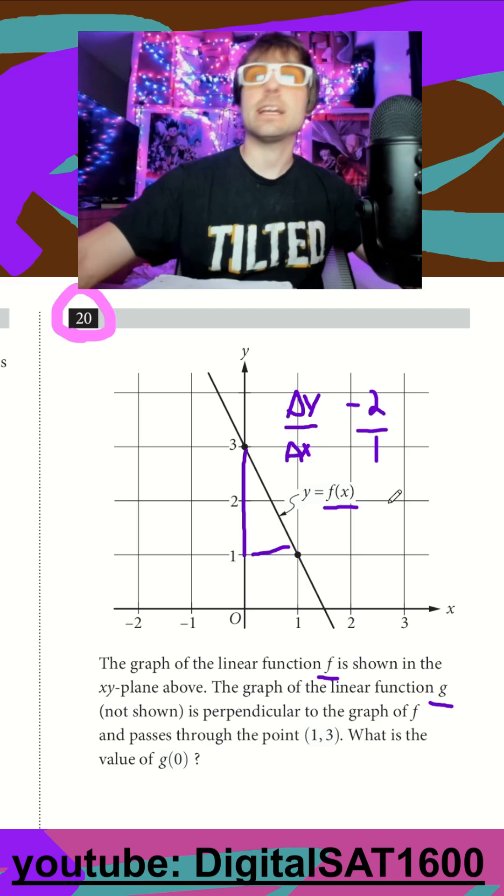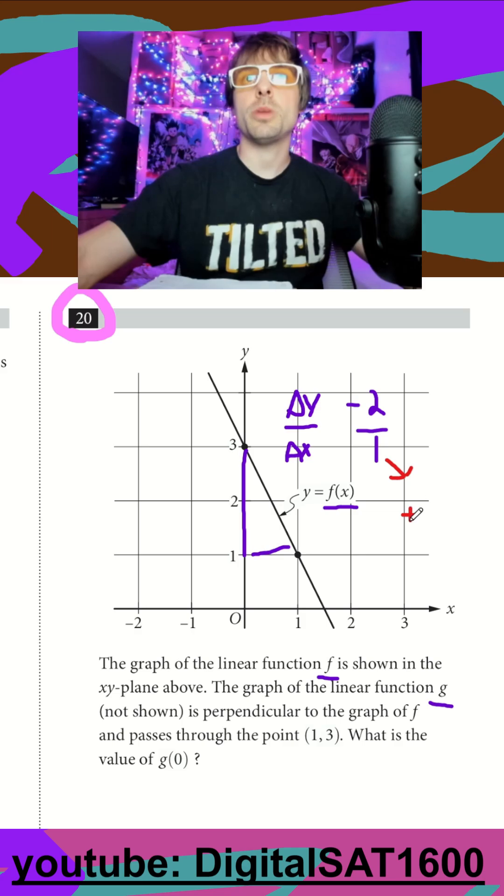So if my slope of f is negative 2 over 1, remember for perpendicular, you have to change your sign, change your fraction. So this should change to positive 1 half.